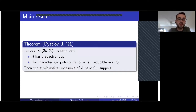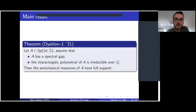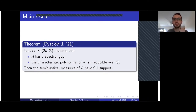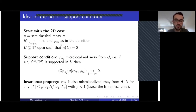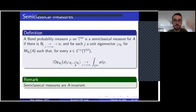Let me give a hint of the proof, starting with a hint of the proof of the 2D case by Nier-Schwartz. You take a semi-classical measure and assume there is an open set U with no mass. Let phi_{N_j} be the eigenstates converging to the semi-classical measure. You know two things: since the semi-classical measure has no mass on U, the phi_{N_j} will be micro-localized away from U — there is no mass on the open set.